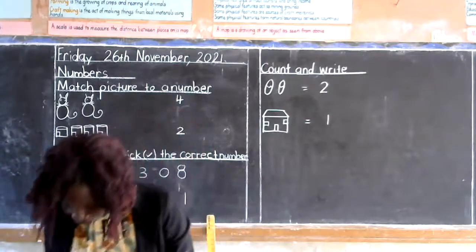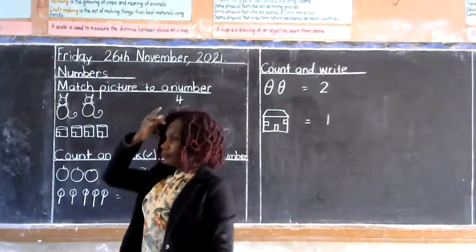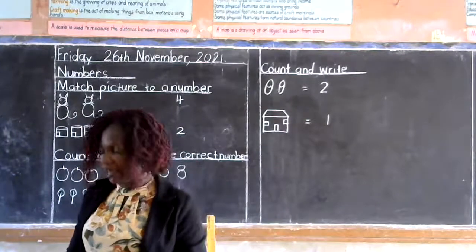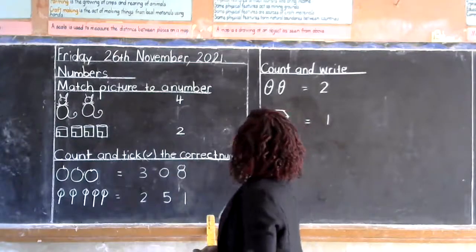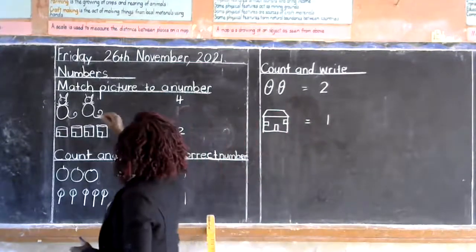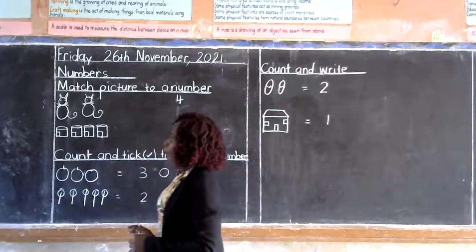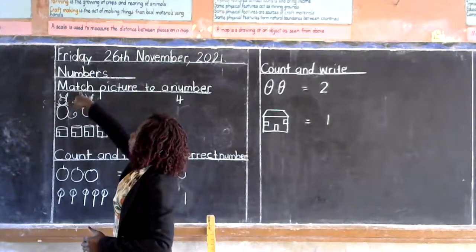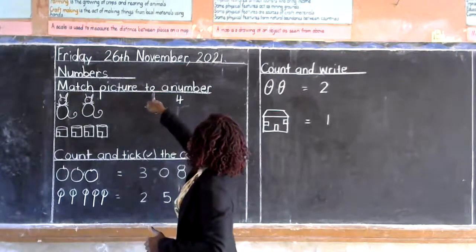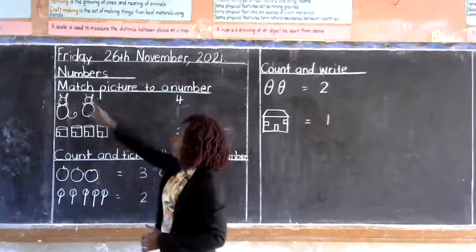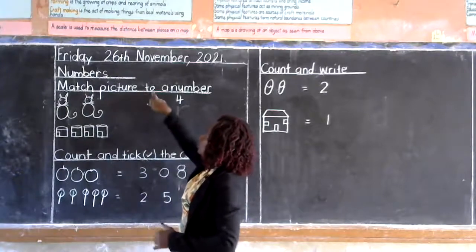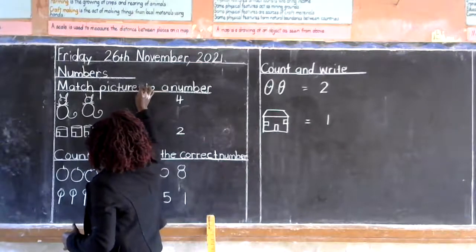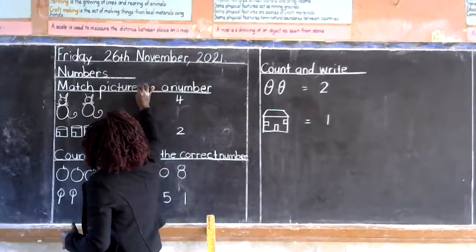Thank you friends. I want you to tell your guardian to open for you page 11. I've told you that we are still on the topic of numbers. Now I've come up with my examples. Can you read the instruction? Match picture to a number. We are going to match pictures to a number.